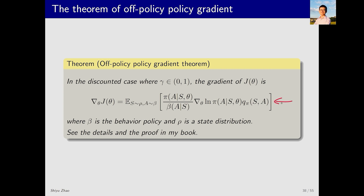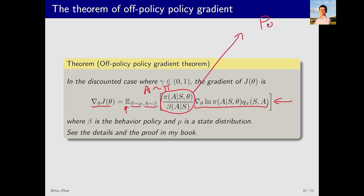The gradient of this objective function is given as follows — I provide the result here and you can refer to my book for the proof. On the left side is the gradient; on the right side is an expectation where the distribution for state s is rho and the distribution for action a is beta. In the on-policy case, action a follows pi; in the off-policy case, action a follows beta. The term inside the brackets is the same as in the on-policy case, except it is now multiplied by the importance sampling weight pi(a|s) / beta(a|s).